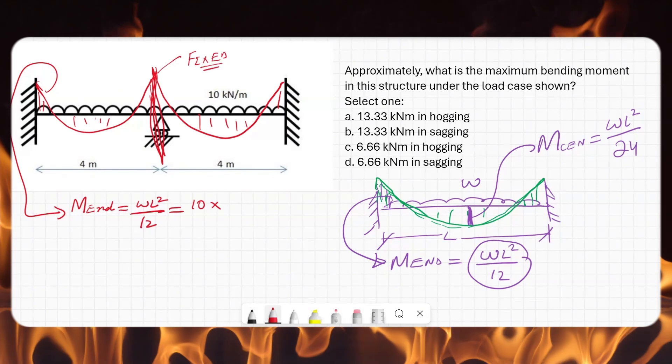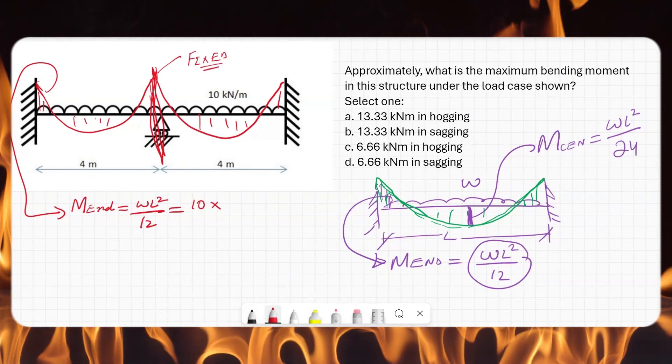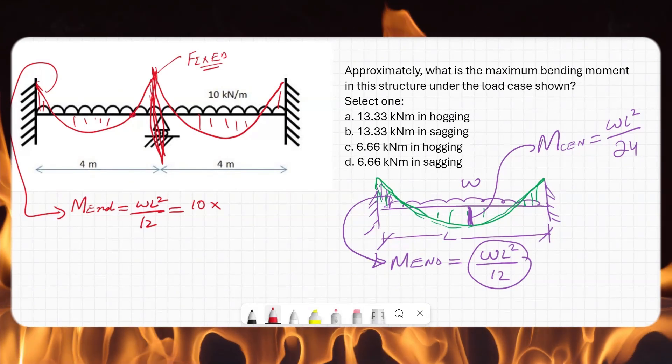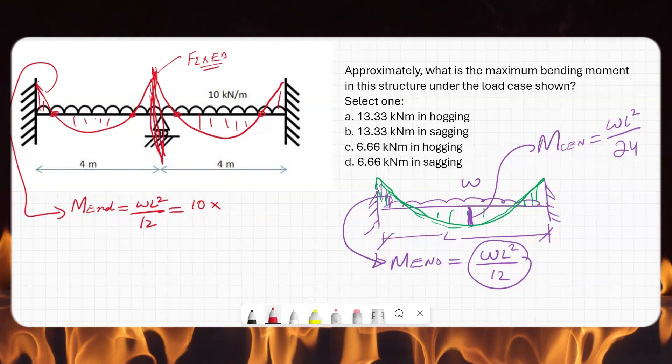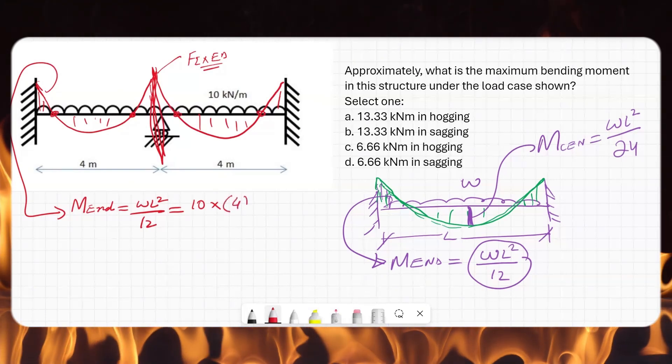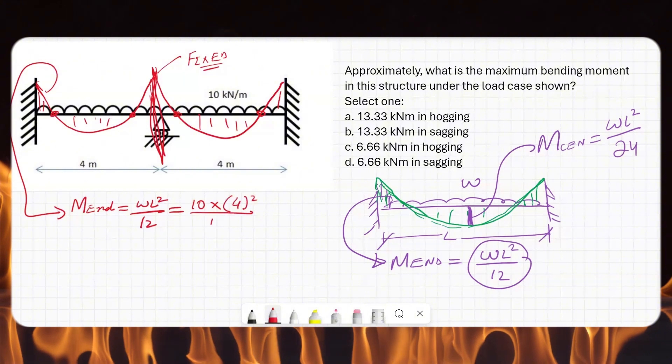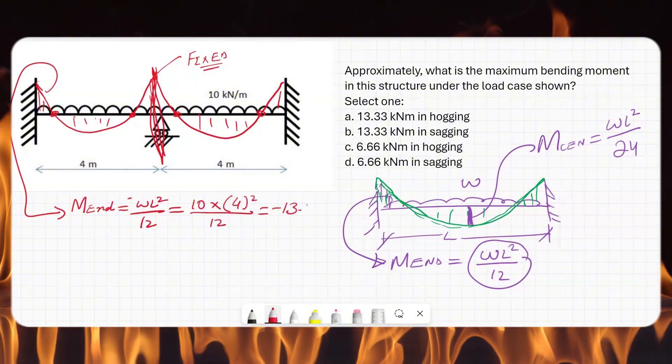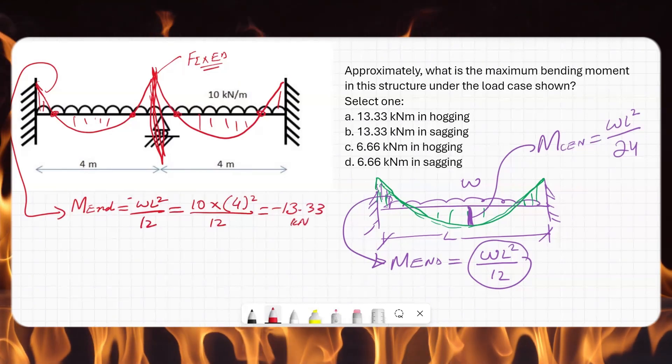if I say that this is a fixed thing, but this will only work if we have same loading in both spans and loading is symmetric. Otherwise the points of contraflexure where bending moment is zero will change. So 10 times 4² divided by 12, this will be negative—13.33 kilonewton-meter, and this is in hogging.